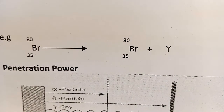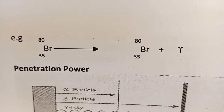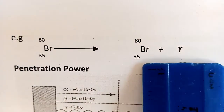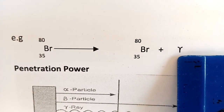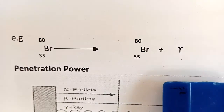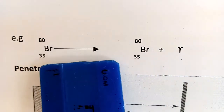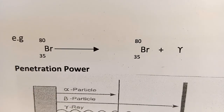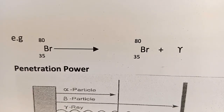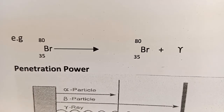In nuclear equations, gamma rays are represented by the gamma sign, or sometimes simply as the word 'energy.' There is no effect on the atomic number or mass number when gamma is emitted — both remain the same, as you can see with atomic number 35 remaining 35.